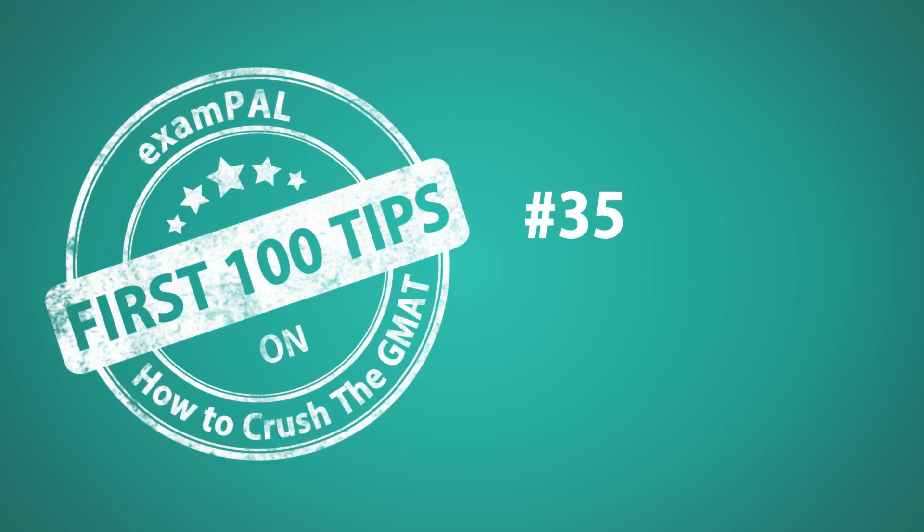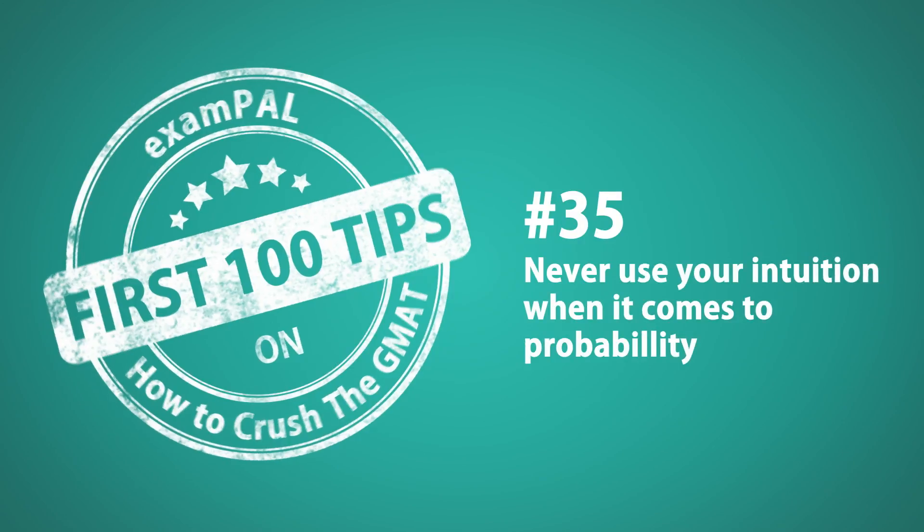Number 35. Never use your intuition when it comes to probability. Probability is crucial to our survival. It's why we should be extremely careful when crossing a highway, but have no need to look both ways while walking in the woods. However, our intuition is often wrong. Did you know that if you cross Fifth Avenue on a Sunday morning, there's a greater chance that a guy named John Johnson,